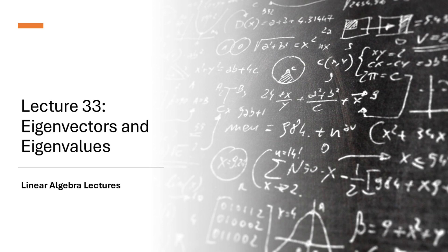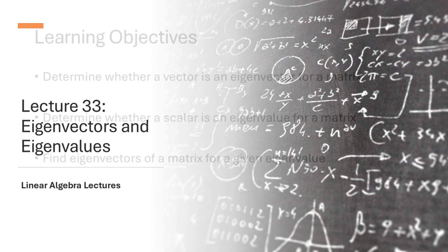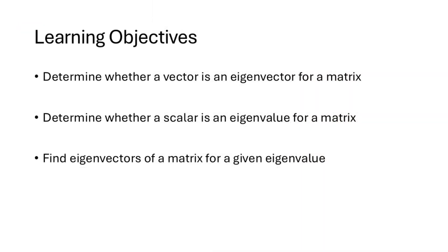Lecture 33, Eigenvectors and Eigenvalues. Our objectives for this lecture are to determine whether a vector is an eigenvector for a matrix, determine whether a scalar is an eigenvalue for a matrix, and find eigenvectors of a matrix for a given eigenvalue.